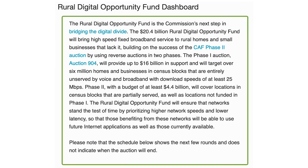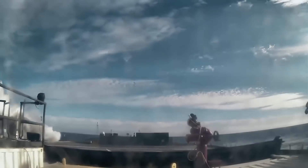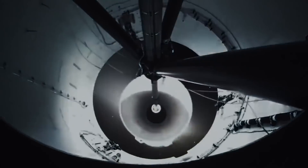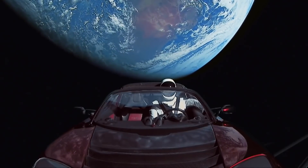These are reverse auctions and there are two phases. Phase one will provide up to $16 billion and will target over 6 million homes and businesses that are entirely unserved with download speeds of at least 25 megabits per second. Phase two will have a budget of $4.4 billion and will cover locations that are partially served as well as locations not funded by phase one. The RDOF will ensure the networks stand the test of time by prioritizing higher network speeds and lower latency so those using the networks will be able to use future internet applications as well.